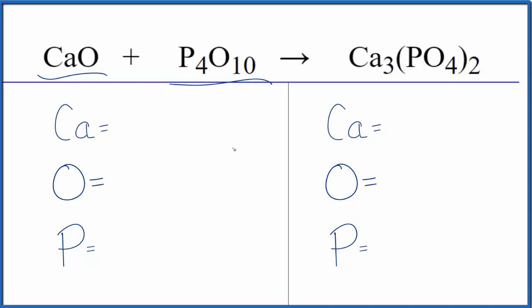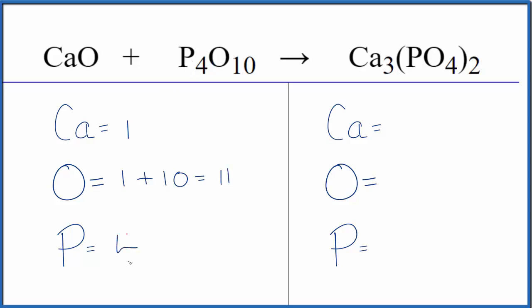First, we count the atoms up for each element. One calcium, one oxygen — plus, don't forget the ten oxygens here — so we have a total of eleven oxygen atoms, and then four phosphorus atoms.